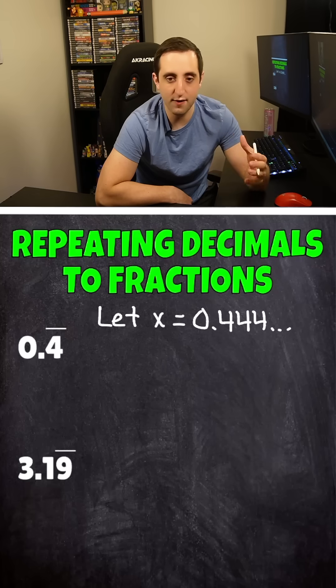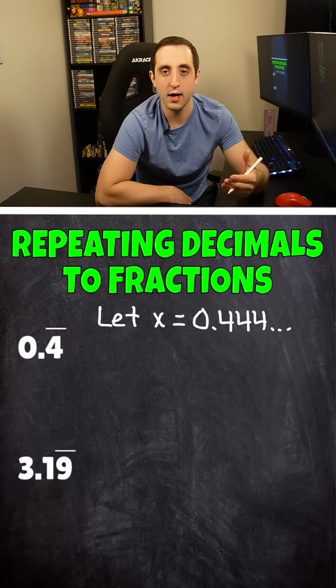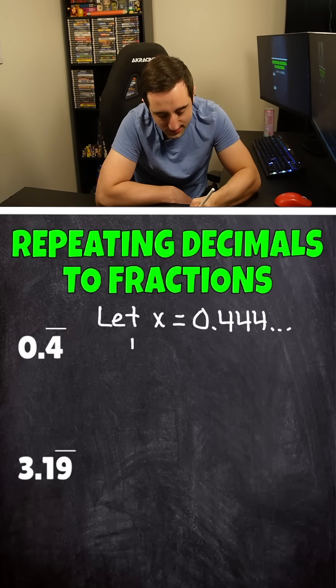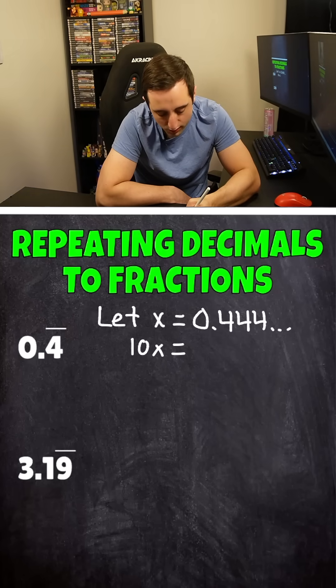So we're going to multiply the left and the right side of our first equation by 10. If we had two numbers repeating, we would do 100, and three numbers would be 1,000. So x times 10 is going to be 10x equals. And then how do I multiply this decimal by 10? We just move the decimal point one place value to the right, and we end up getting 4.4 repeating.